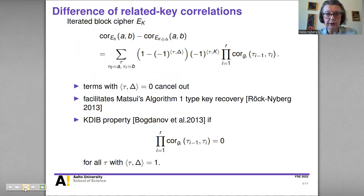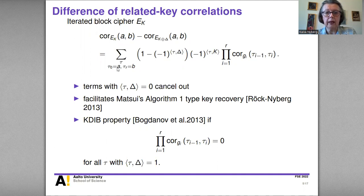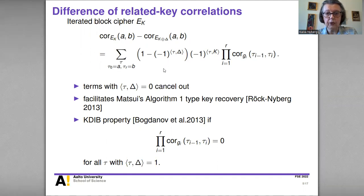Let us look at the difference of related key correlations, particularly in the case of an iterated block cipher. The correlation can be given as a sum taken over all trails with input mask A and output mask B, of the trail correlations with signs depending on the key. When we take the difference, we get a factor which depends only on the key difference delta. Terms where the inner product between tau and delta equals zero cancel out.